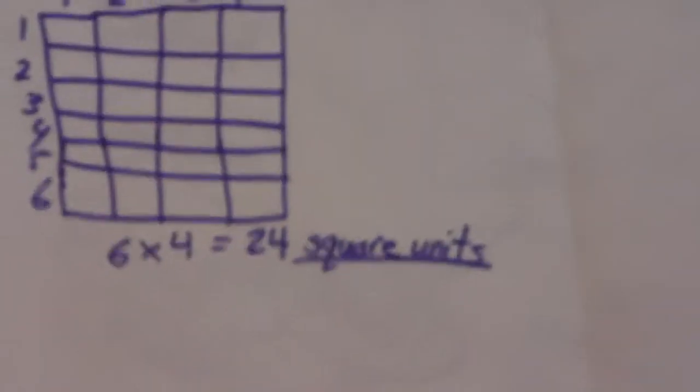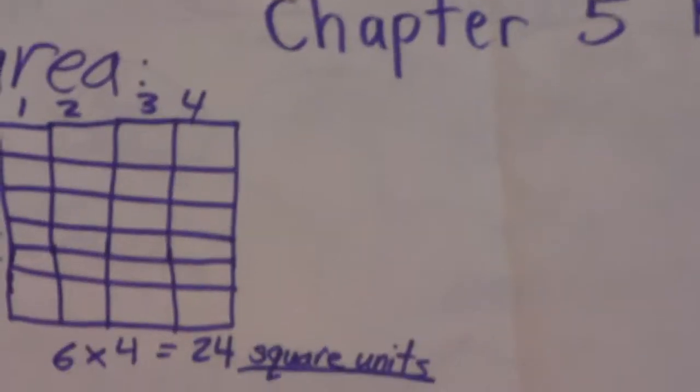All right? And you could also count them. You could go 1, 2, 3, 4, 5, 6, 7, 8, 9, 10, all the way up to 24. And you would find 24 squares here.